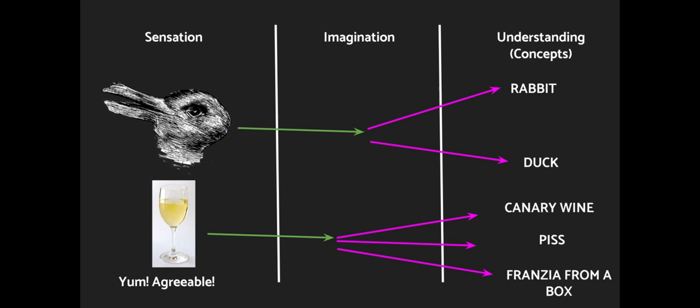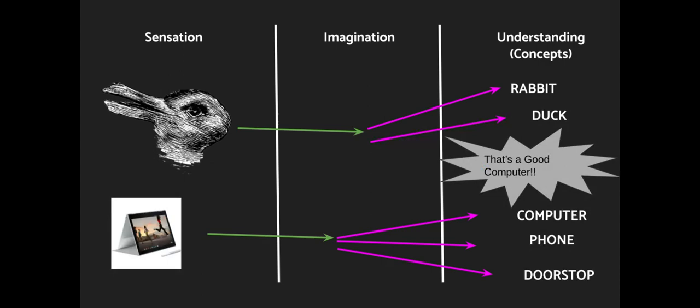Kant distinguishes three different sorts of judgments. The first are judgments of agreeableness, which have to do with our sensation and depend on our desires. For example, I find chocolate ice cream most agreeable because I just desire that sensation, whereas other folks have different preferences and find vanilla ice cream more agreeable.